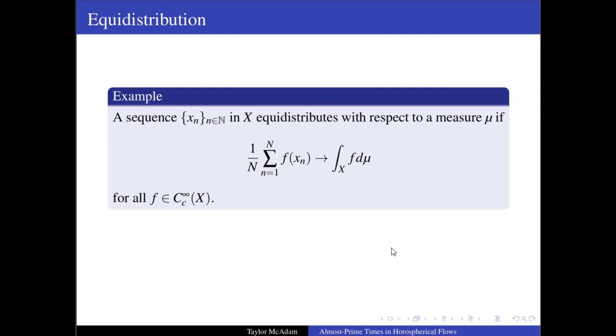Equidistribution means slightly different things in context, but informally, a subset of some space is equidistributed with respect to a measure if it spends the expected amount of time in measurable subsets. This corresponds to the weak convergence of a family of measures defined on some averaging sequence converging to the measure of interest. For example, a sequence in X equidistributes with respect to a measure μ if sampling up to time N along this sequence converges to the average with respect to μ as N goes to infinity for all functions in some space of test functions. For the purposes of this talk, we're going to use compactly supported smooth functions.